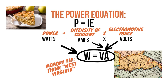You knew it was coming — time for some math. Don't be scared; the calculations are pretty straightforward. The power equation is P equals IE. If you think of a slice of pie, it's easy to remember. Power equals intensity times electromotive force. Or to put it another way, power equals speed of current times the pressure behind it. I find it easier to remember the formula using the names of the units of measurement. People sometimes call this the West Virginia equation because it goes W equals VA — watts equals volts times amps.